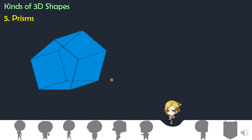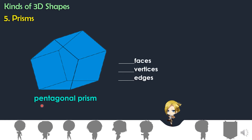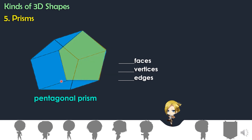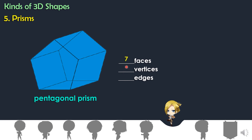Next kind of prism is pentagonal prism. It is called pentagonal because two faces of this prism are in the shape of a pentagon. Let's begin counting the faces: one, two, three, four, five, six, seven. Pentagonal prism has seven faces.